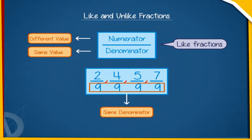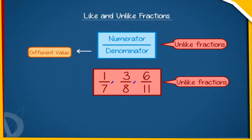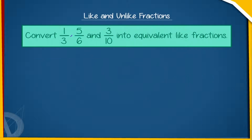Similarly, fractions with different denominators are called unlike fractions. For example, 1 by 7, 3 by 8, 6 by 11, etc., are unlike fractions. Let us convert 1 by 3, 5 by 6, and 3 by 10 into equivalent like fractions.